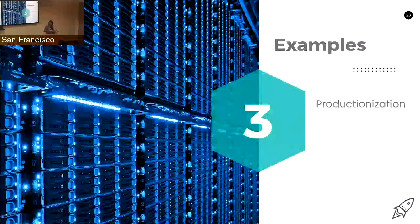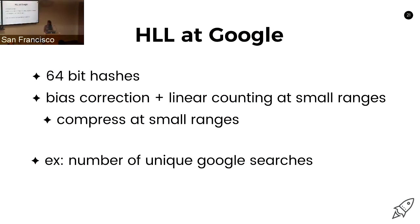Moving on to where I've seen this used in practice: there was a follow-up paper in 2013 written by Google that talks about what they used to count the number of unique Google searches. They expanded from 32-bit to 64-bit hashes and had both bias correction and the linear counting algorithm at small ranges. They also compressed their very sparse vector heavily, so they saw much better results at smaller cardinality values.